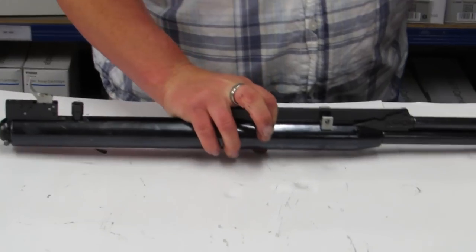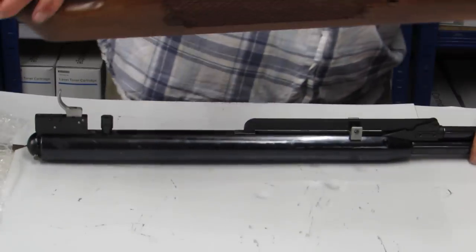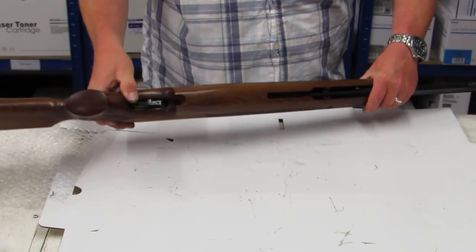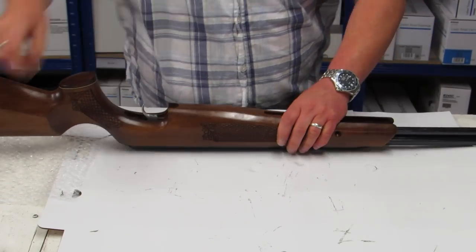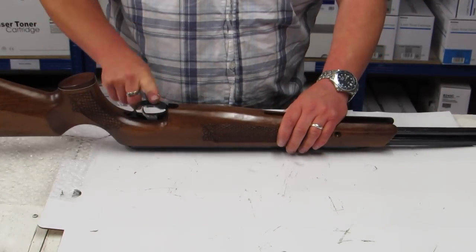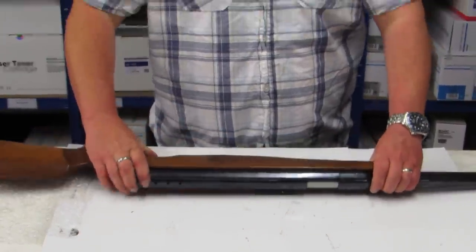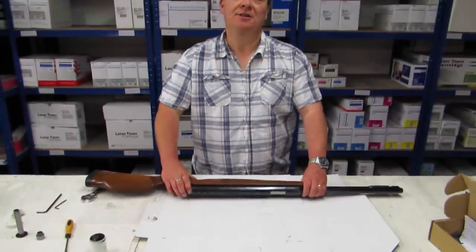so that when we get our stock that sits nicely in the recess. Then you just get your trigger guard, your four screws and put it back together. And that is all there is to stripping and tuning the TX200.